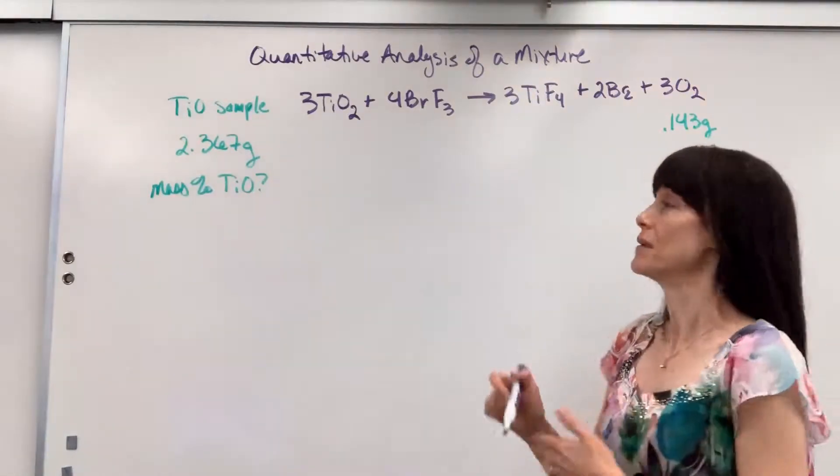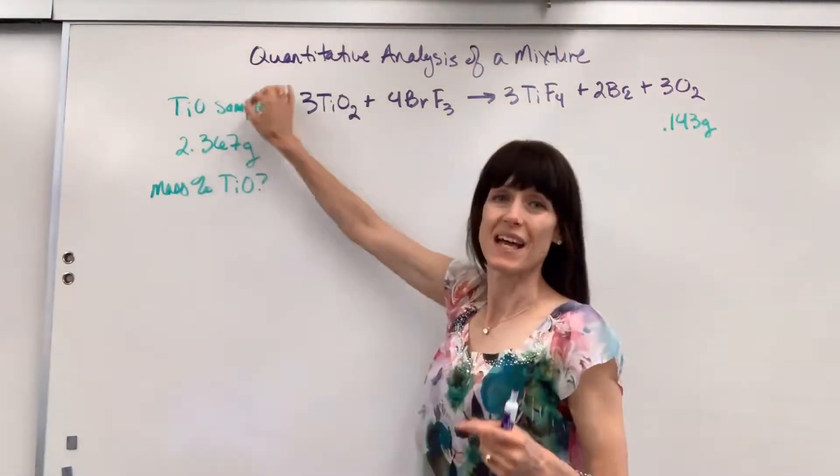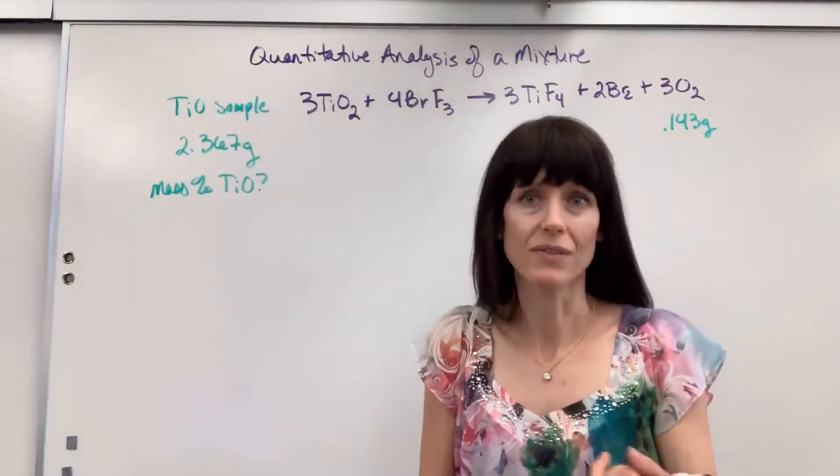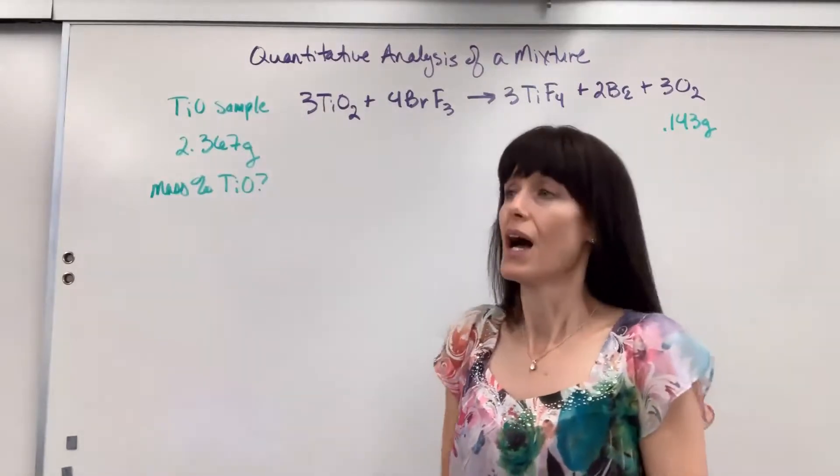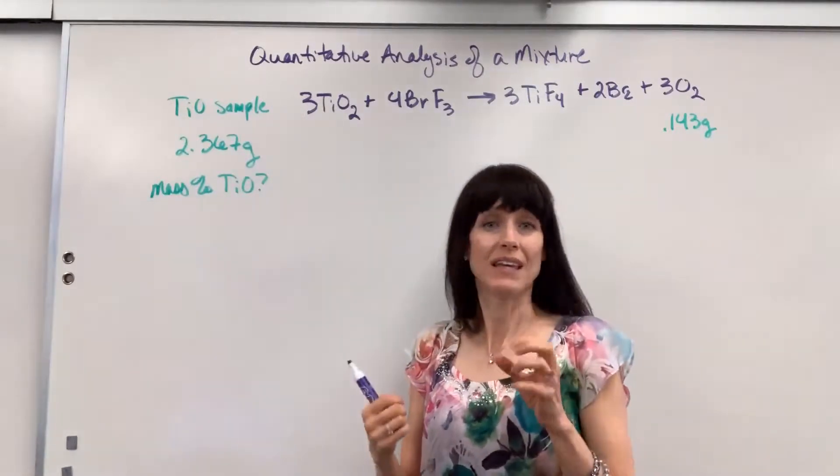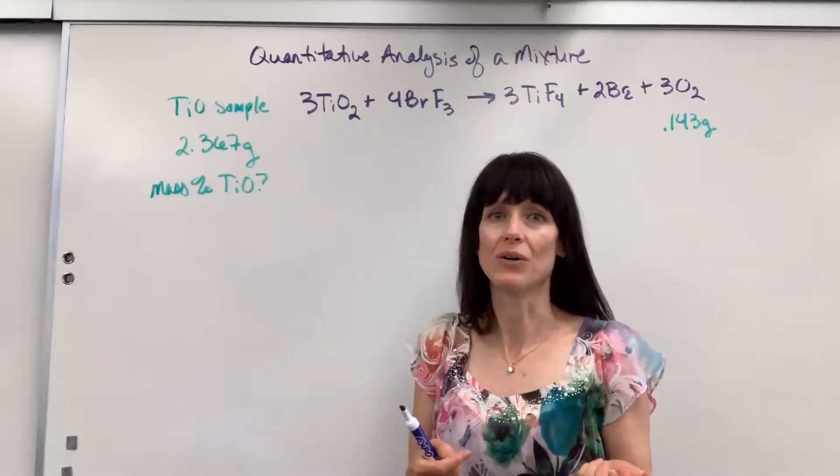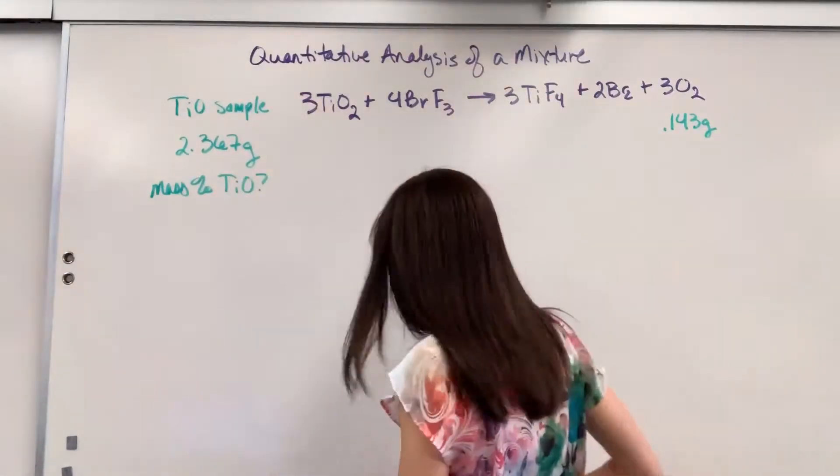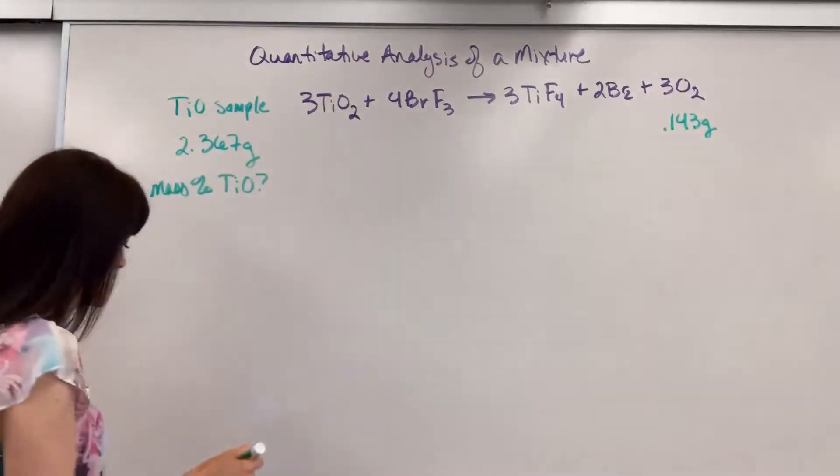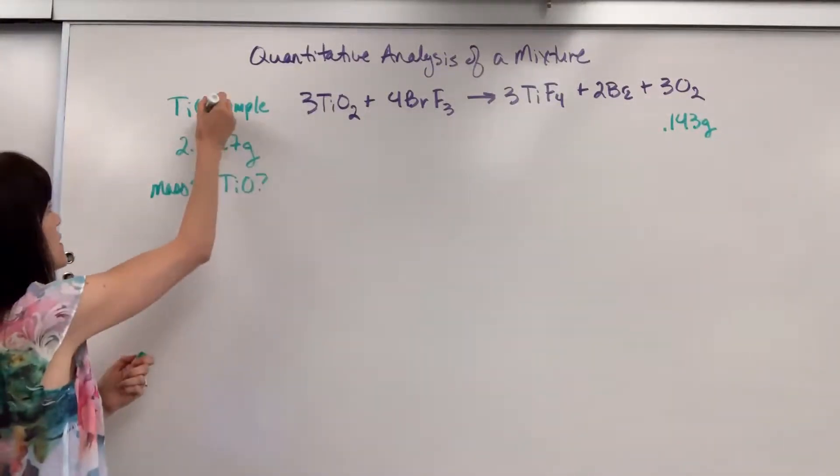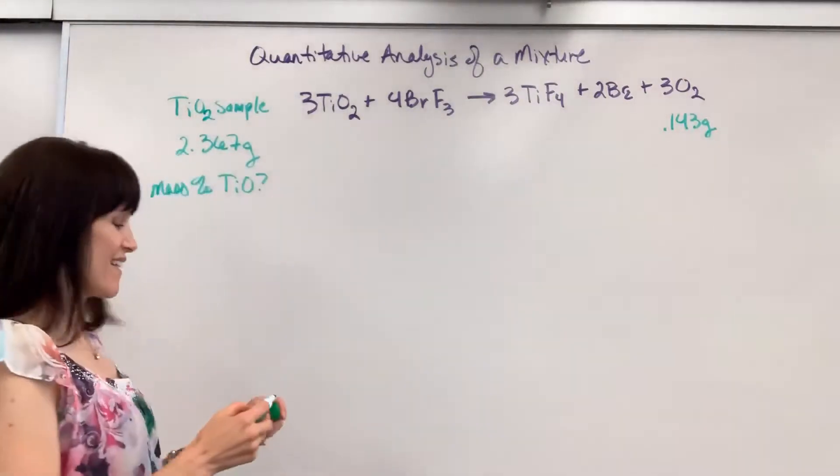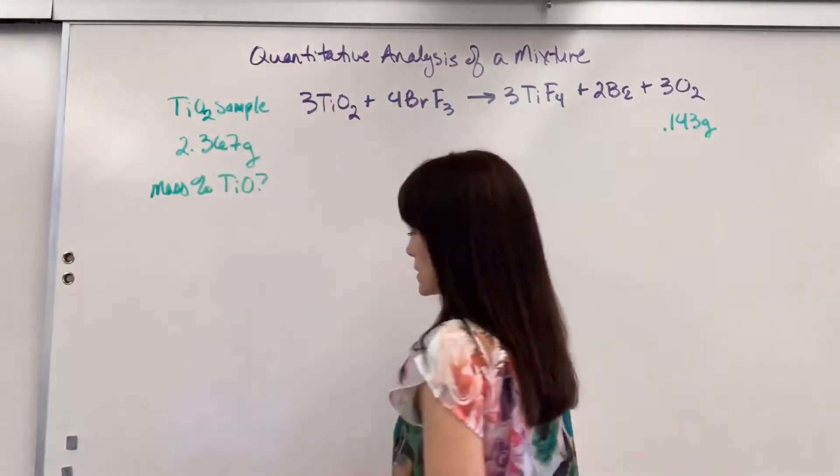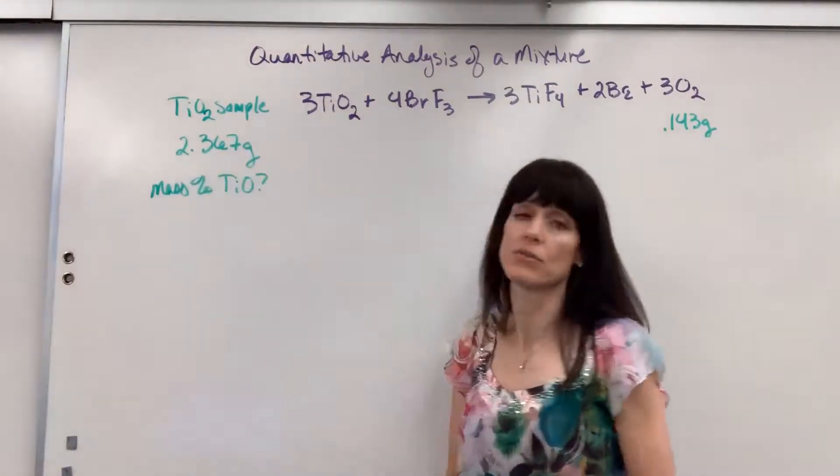So this is what we're given. We are going to have a sample and they won't say mixture. They're not going to say impure, but you have to read the inferences to realize, oh, this is not a pure sample. They said that there's a sample containing titanium four oxide, I forgot my subscript two there, containing titanium four oxide and the sample size is 2.367 grams.